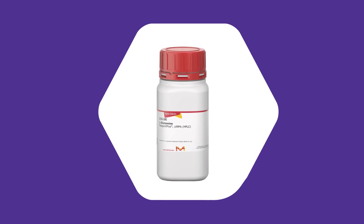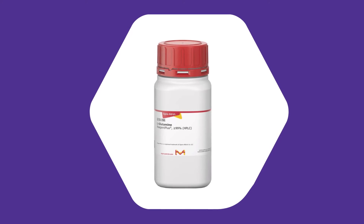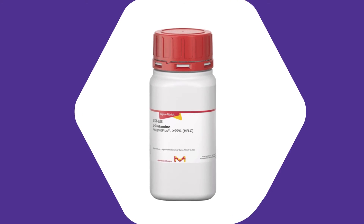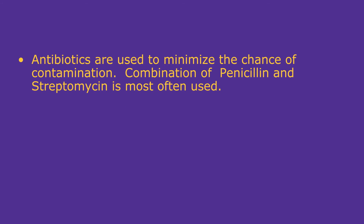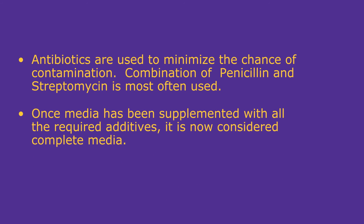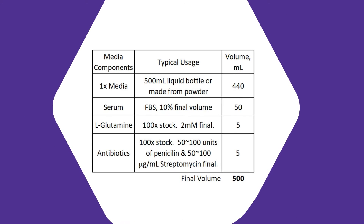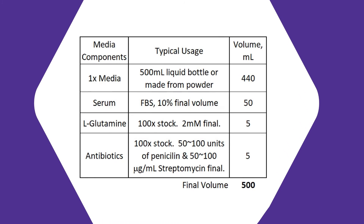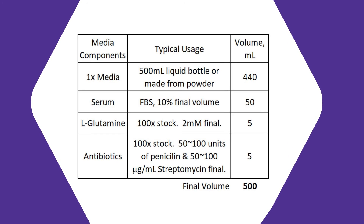Another common supplement is L-glutamine and antibiotics. L-glutamine provides additional nutrients for cells, and since this amino acid is unstable, it is often added during media preparation before use. Antibiotics are used to minimize the chance of contamination. A combination of penicillin and streptomycin is most often used. Once media has been supplemented with all the required additives, it is now considered complete media. A typical composition of a very basic complete media is shown as an example here. Please remember that the actual formulation of your complete media will depend on your specific needs to grow and culture your cells, and it can include a variety of additional supplements such as specific growth factors, hormones, and enzymes.